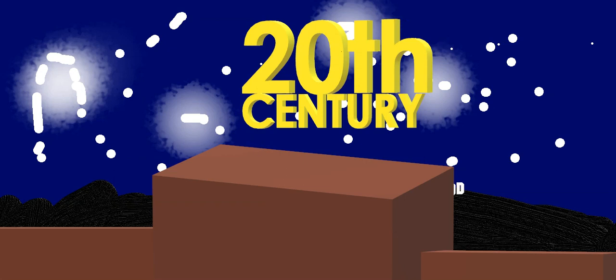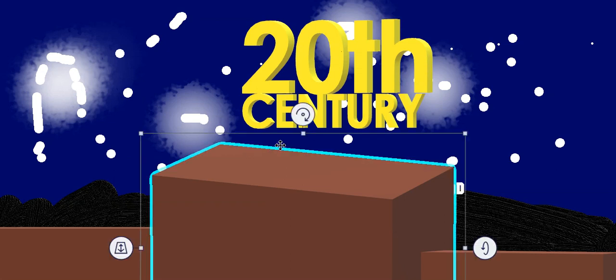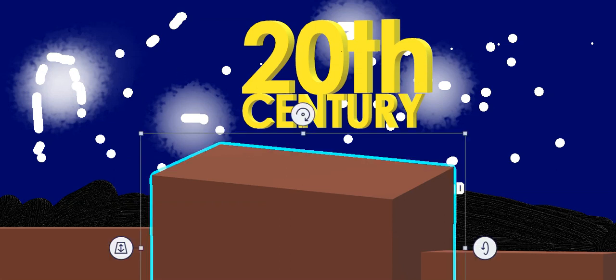Make it bigger, 72, and time for the final one — 3D text — and then you must type fox.